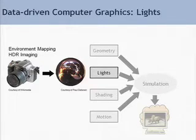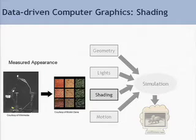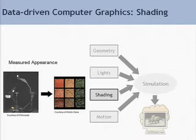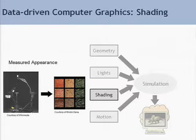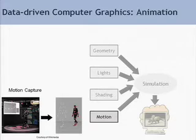Many of us have used Paul Debevec's high dynamic range light probes as illumination sources. Progress in digital imaging and digital cameras also contributed to the development of different systems to measure properties of real-world materials. We used goniospectral reflectometers to measure BRDFs, spatially varying BRDFs, BTFs, and even materials with subsurface scattering. And of course, these materials could be applied to arbitrary geometry under arbitrary light sources.